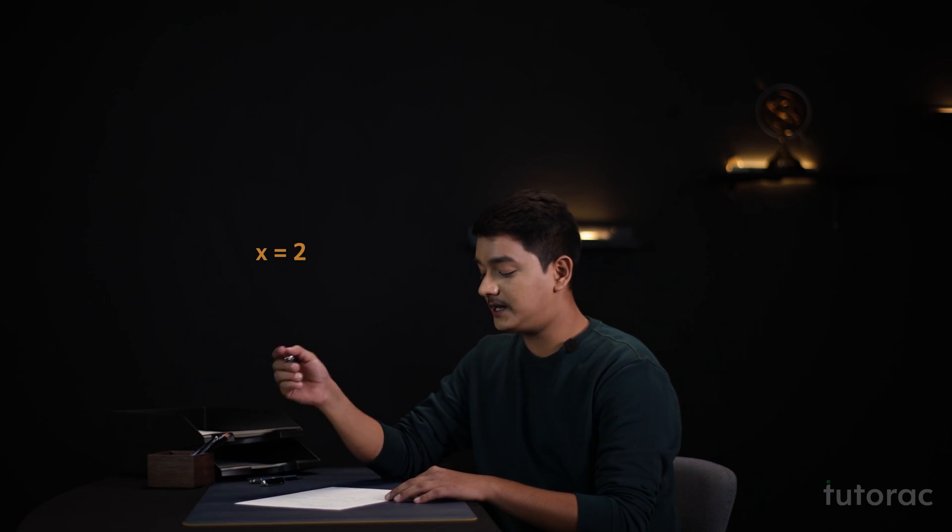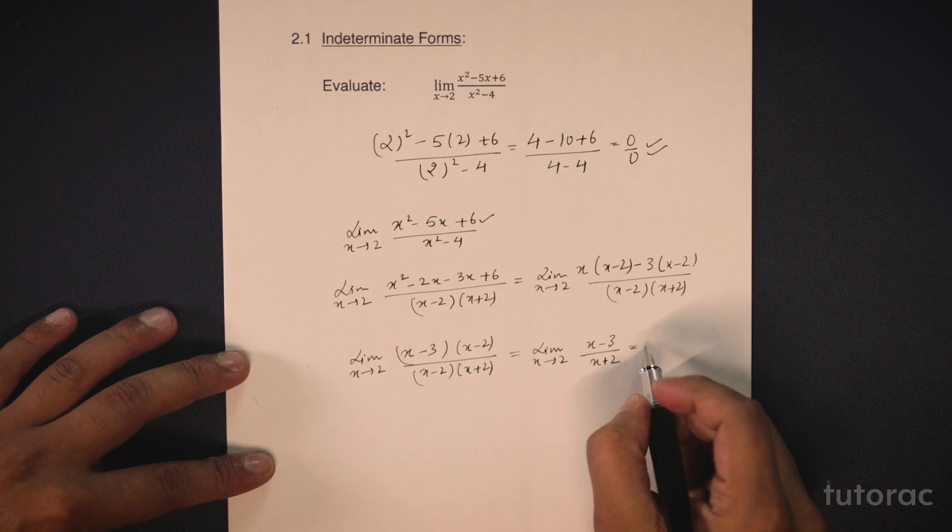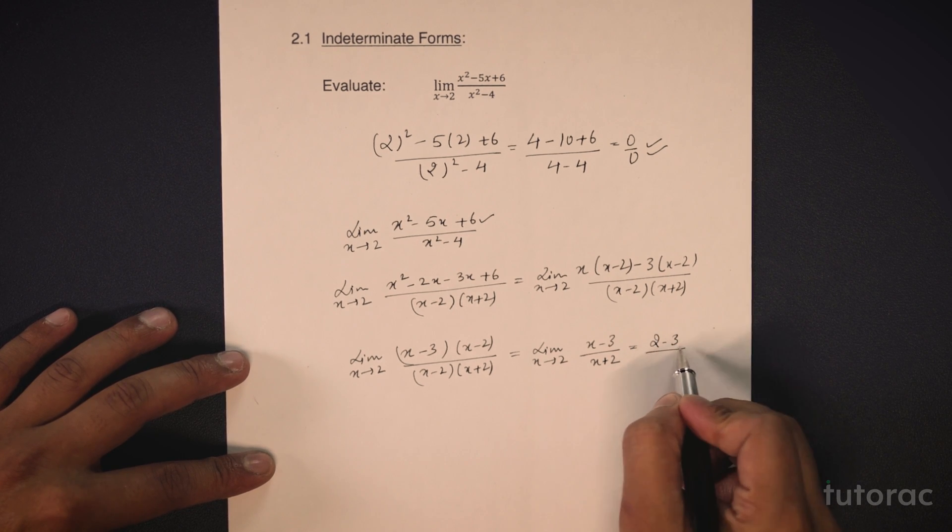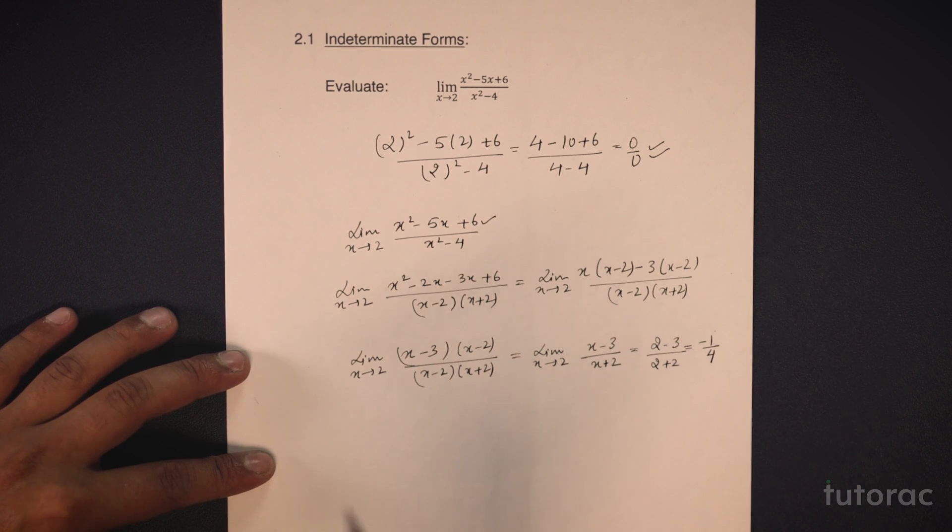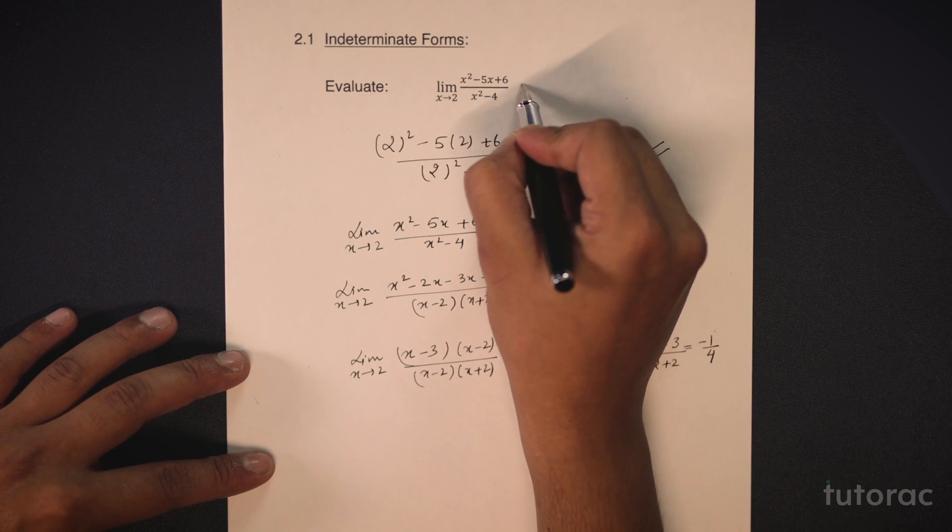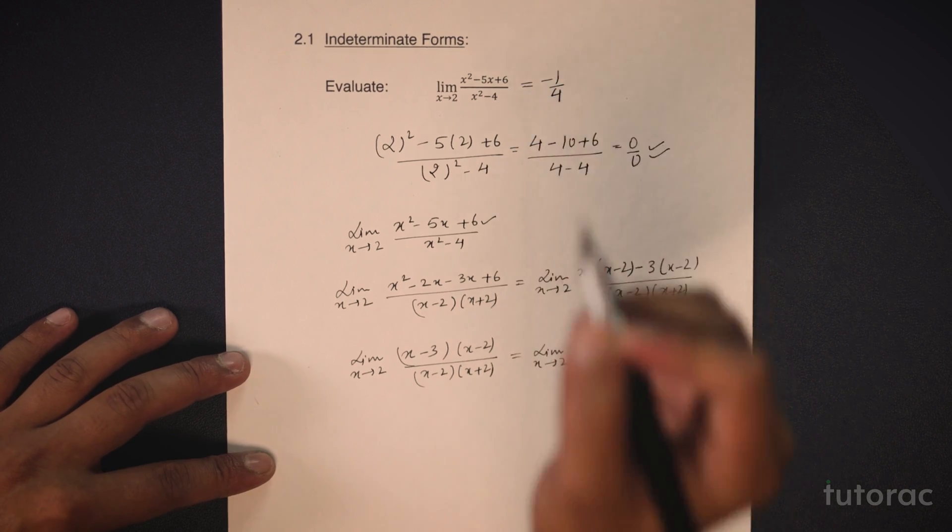Now if we put the value of x as 2, then we will get 2 minus 3 upon 2 plus 2 which is equal to minus 1 by 4. Hence, the value of this limit is minus 1 by 4.